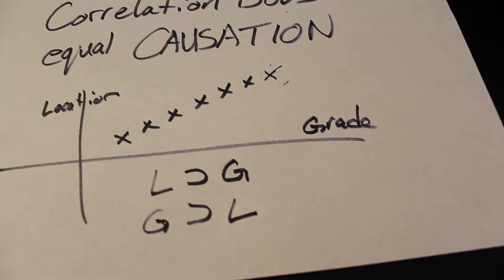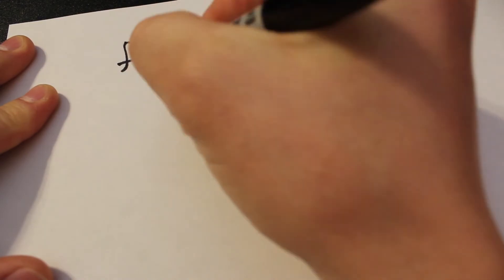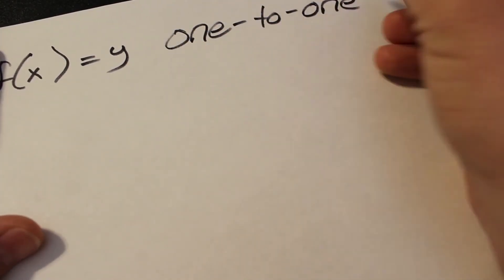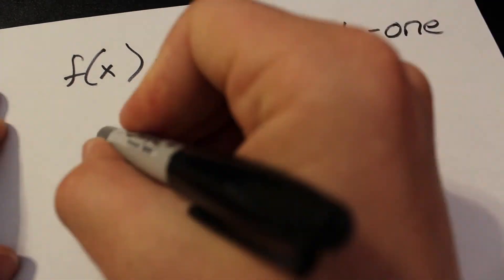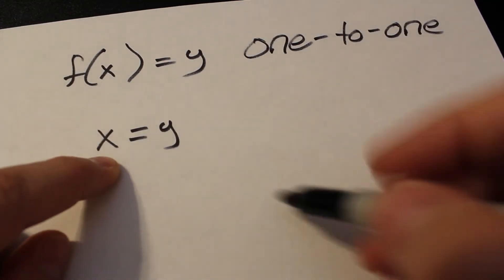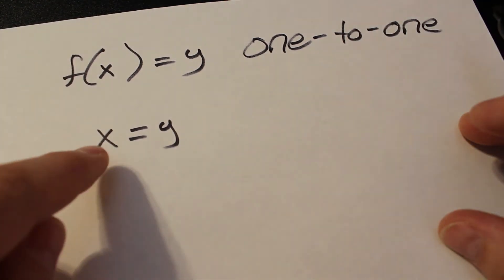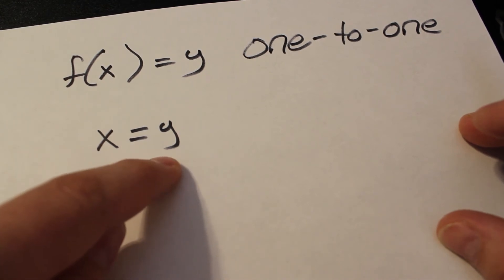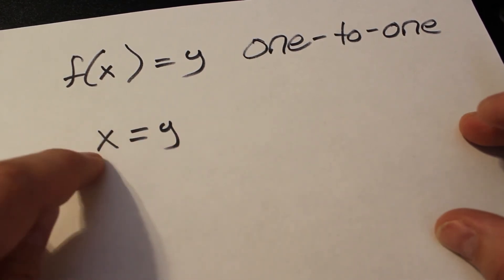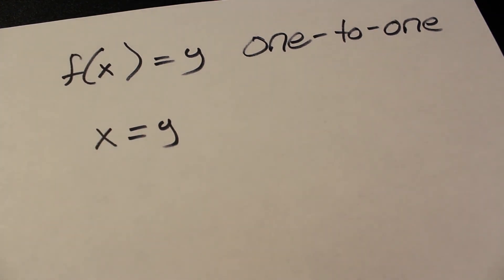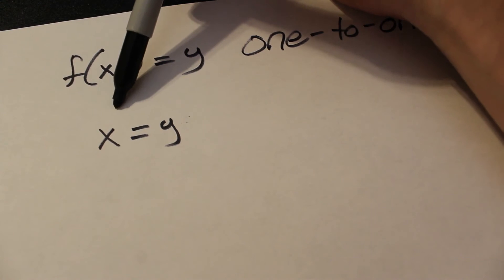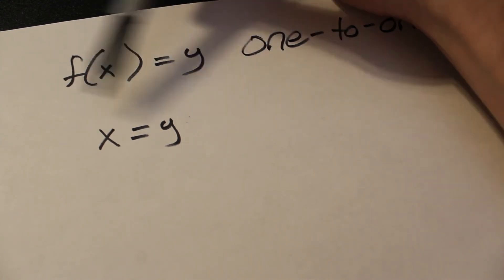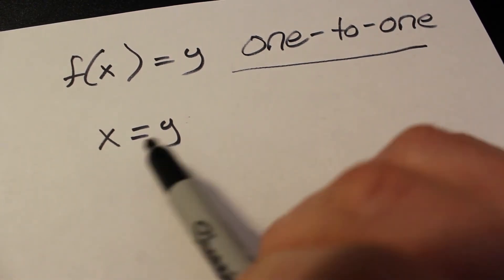One of the things in mathematics that you have to account for before you can work with functions is showing that a function is one-to-one. What does it mean to be one-to-one? It means that every time I put an x value in, it is directly tied to only one value of y. If I plug in 1, y must be 1; if I plug in 19, y must be 19; if I plug in negative 50, y must be negative 50. There is only one specific output for every input, and only one specific input for every output. That's a one-to-one function.